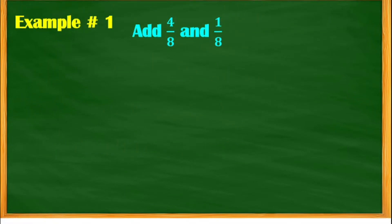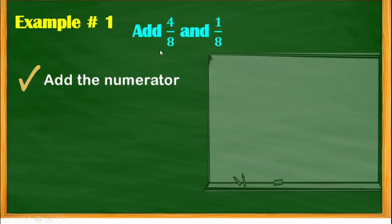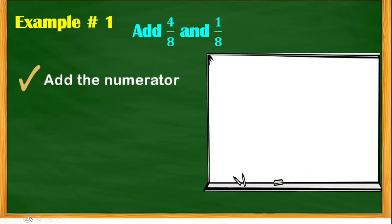Let's proceed to example number 1: add 4/8 and 1/8. These are similar fractions because the denominators of 4/8 and 1/8 are the same. So first, we're going to add the numerator because the operation is addition. The given is 4/8 added by 1/8. Add the numerators: 4 plus 1, the answer is 5.